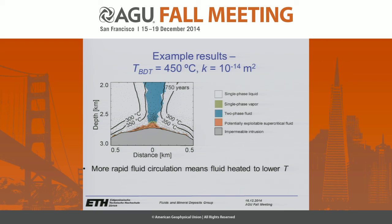Even though the dimensions of the supercritical fluid resource are much smaller compared to the 10⁻¹⁵ square meters case, the mass fluxes of supercritical fluid in the near vicinity of the intrusion are much greater because the host rock permeability is an order of magnitude higher.